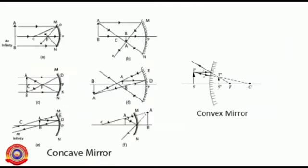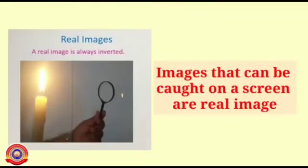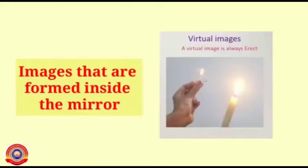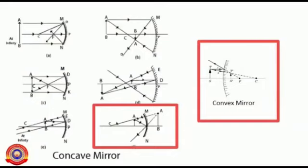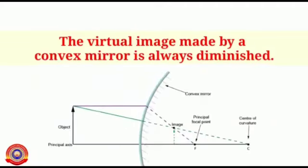Do you understand about images formed by spherical mirrors? Some images are real and some are virtual. Real images can be caught on a screen and are always inverted. Virtual images are formed inside the mirror and are erect. Virtual images are made by both concave and convex mirrors, but the virtual image made by a concave mirror is always enlarged, while the virtual image made by a convex mirror is always diminished.